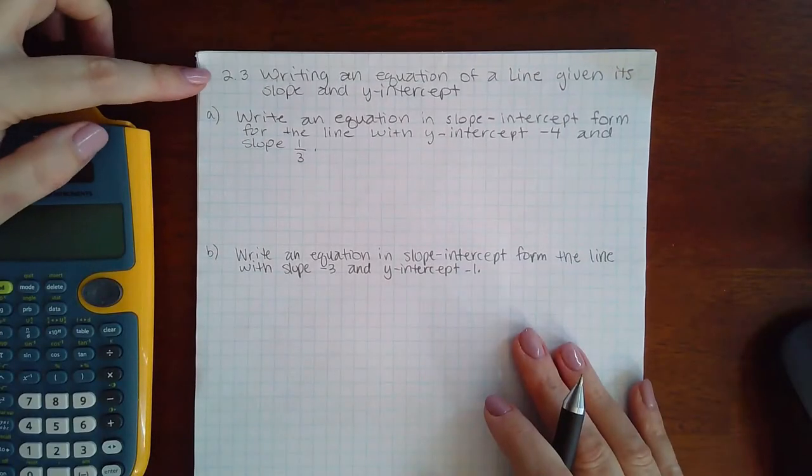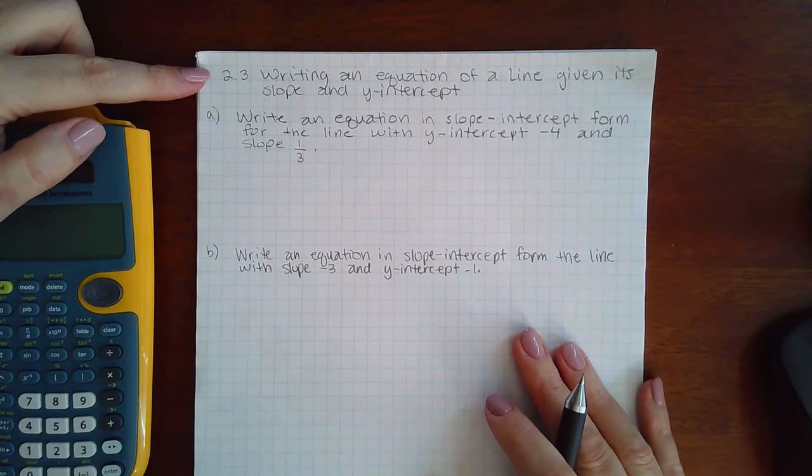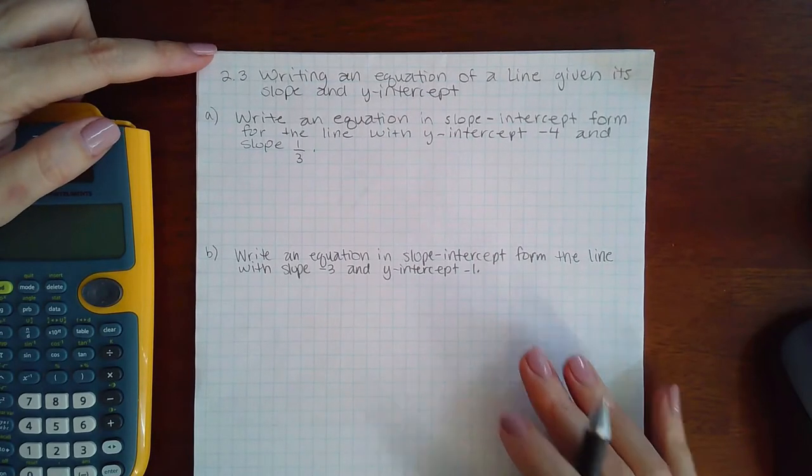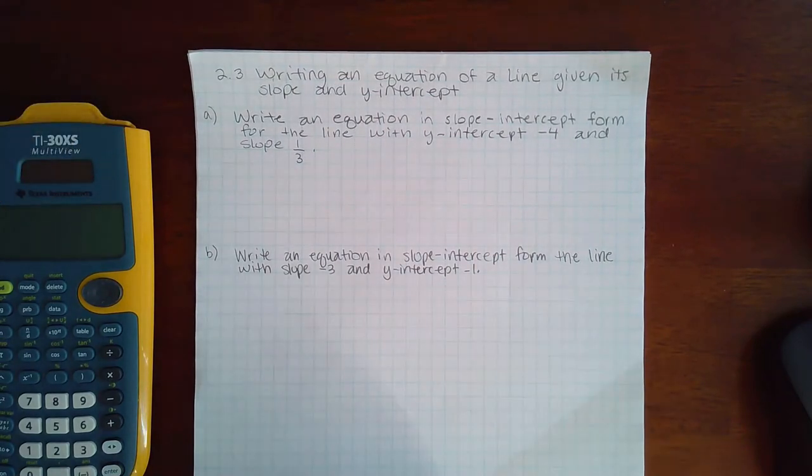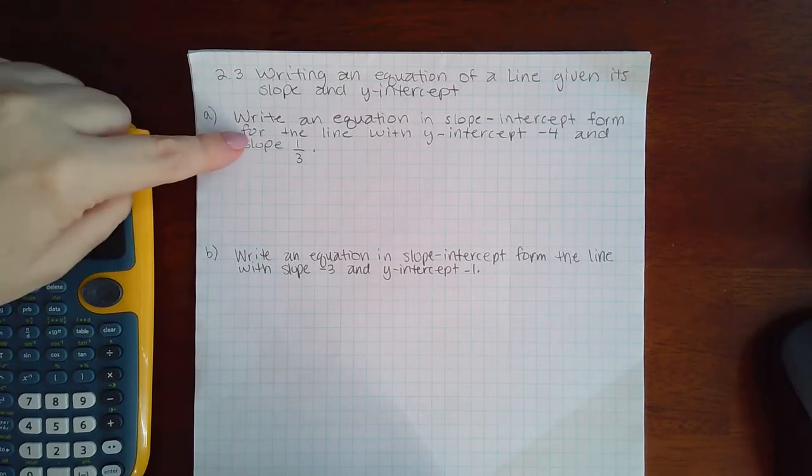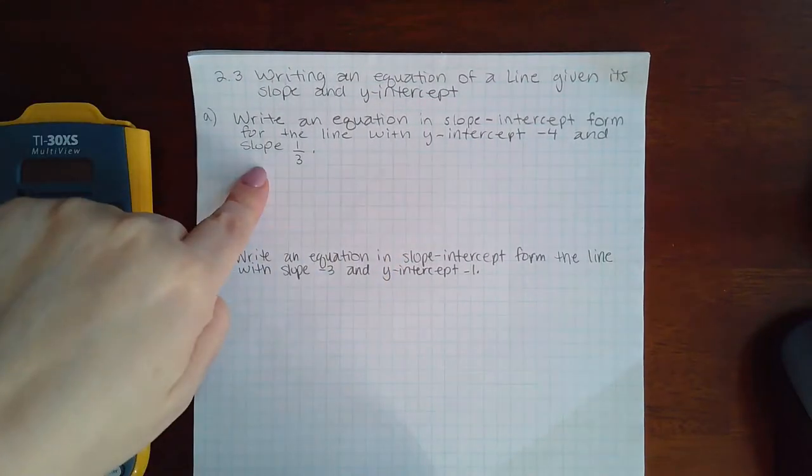Okay, here we're working on 2.3: writing an equation of a line given its slope and y-intercept. I've written down two examples that look slightly different in that this problem gives you the y-intercept first and then the slope second, and this problem gives you the slope first and the y-intercept second.